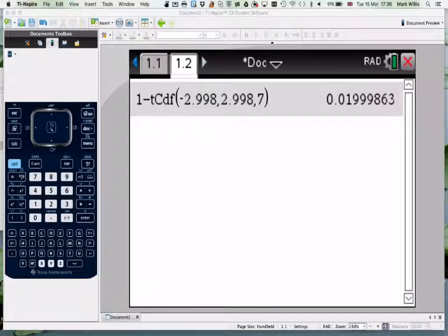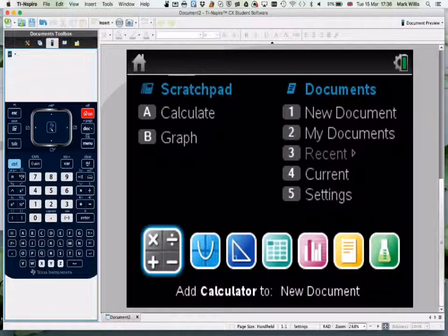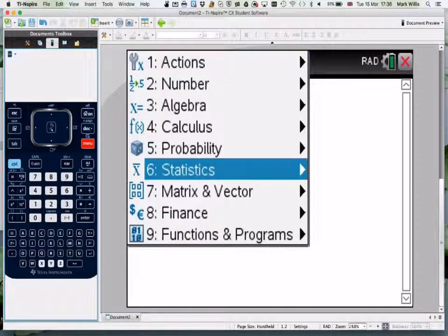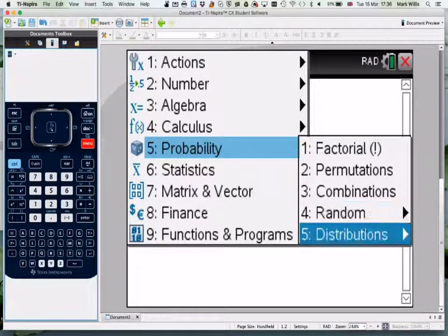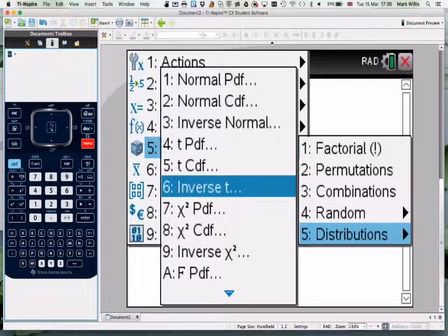So again, go to the calculator. I'll go to a new page, then do Menu, number 5 Probability, number 5 Distributions, TCDF.